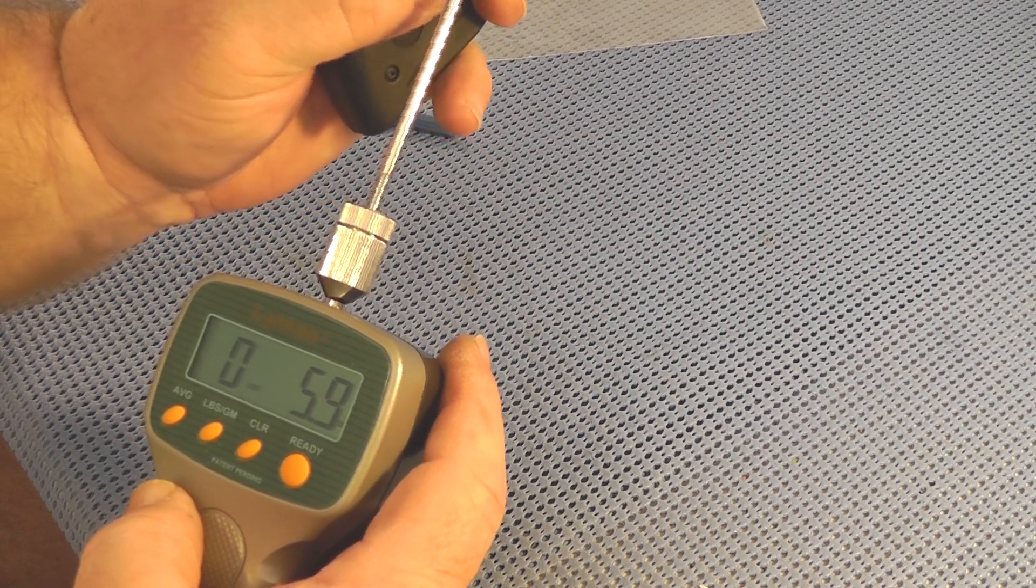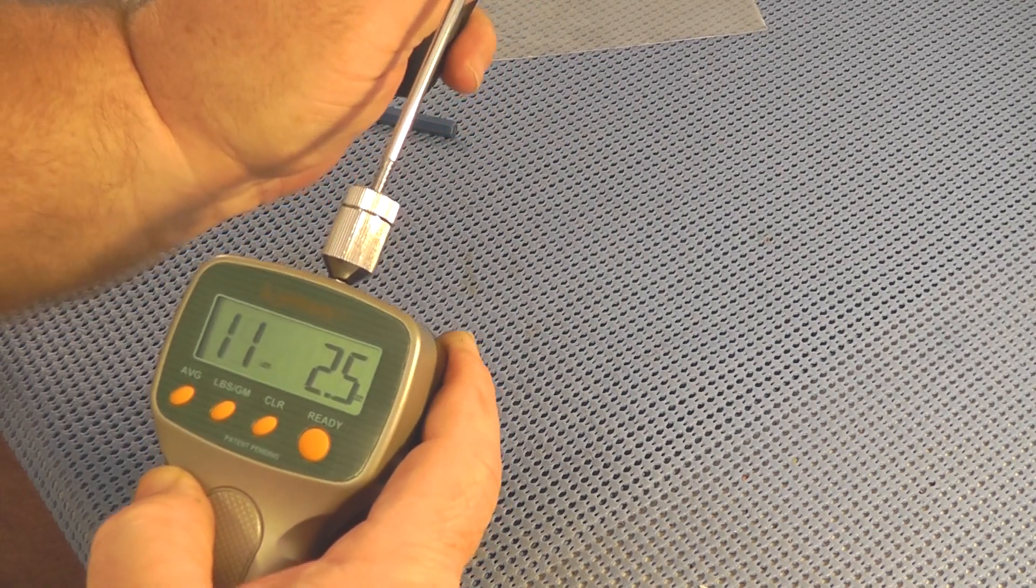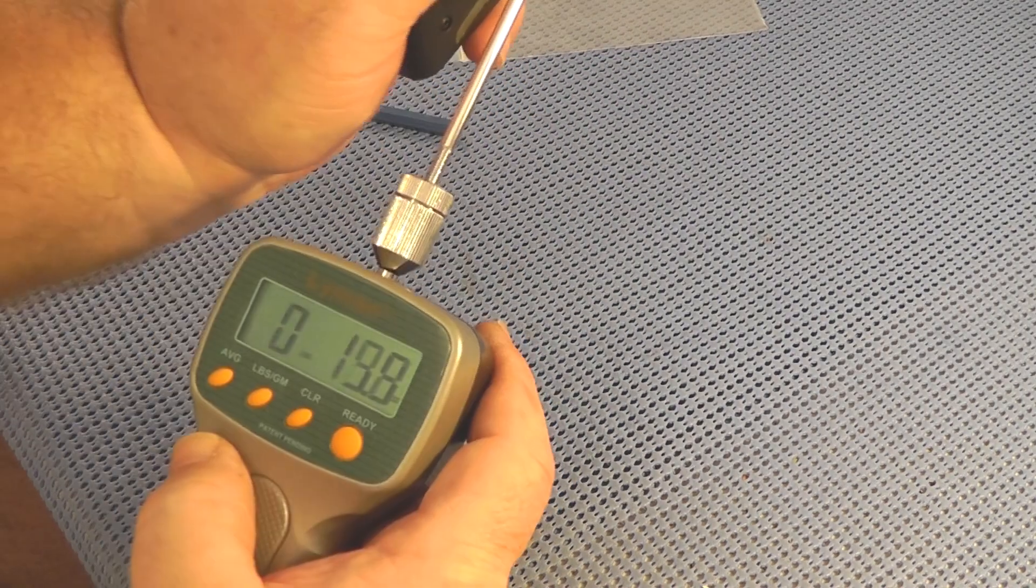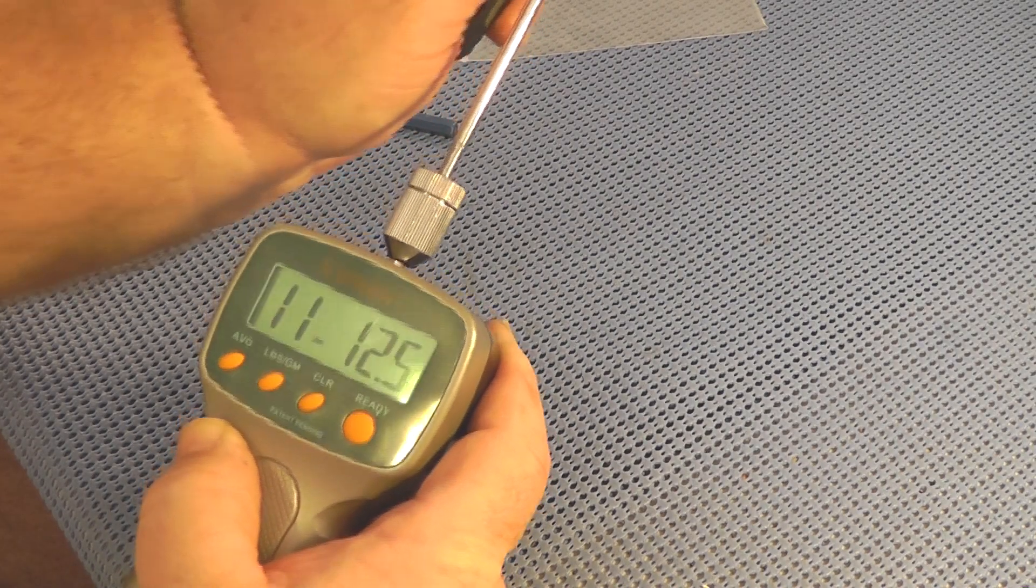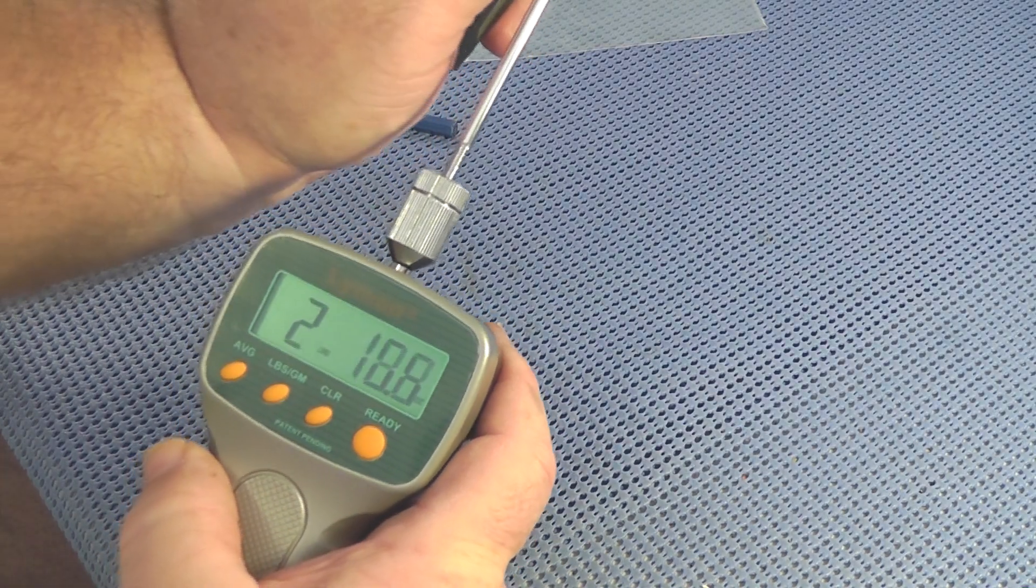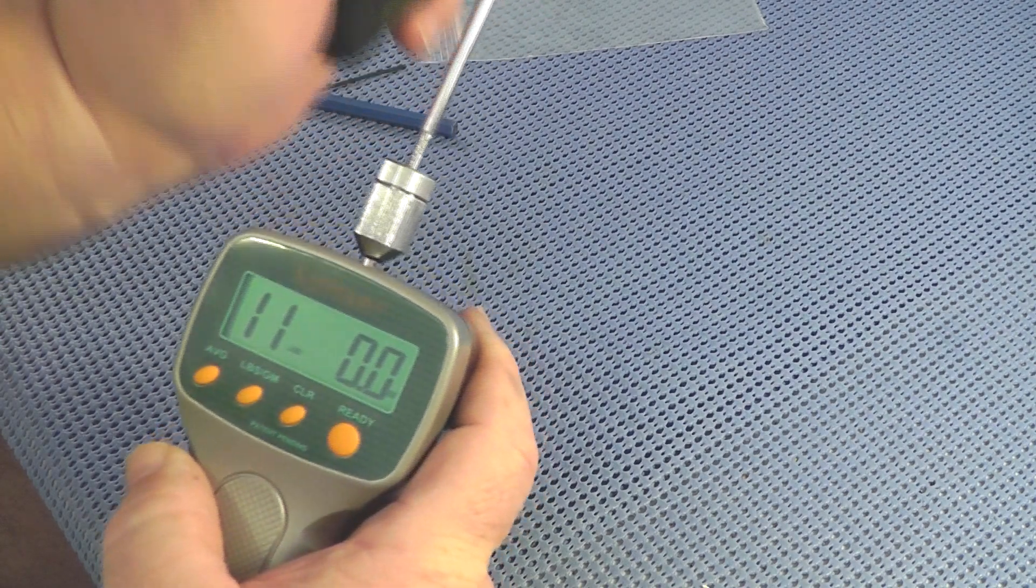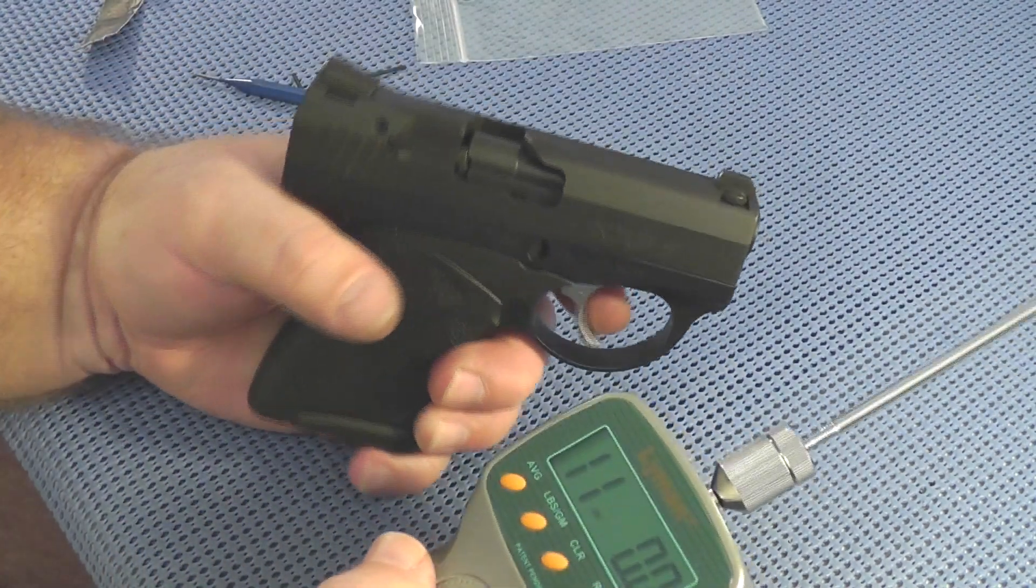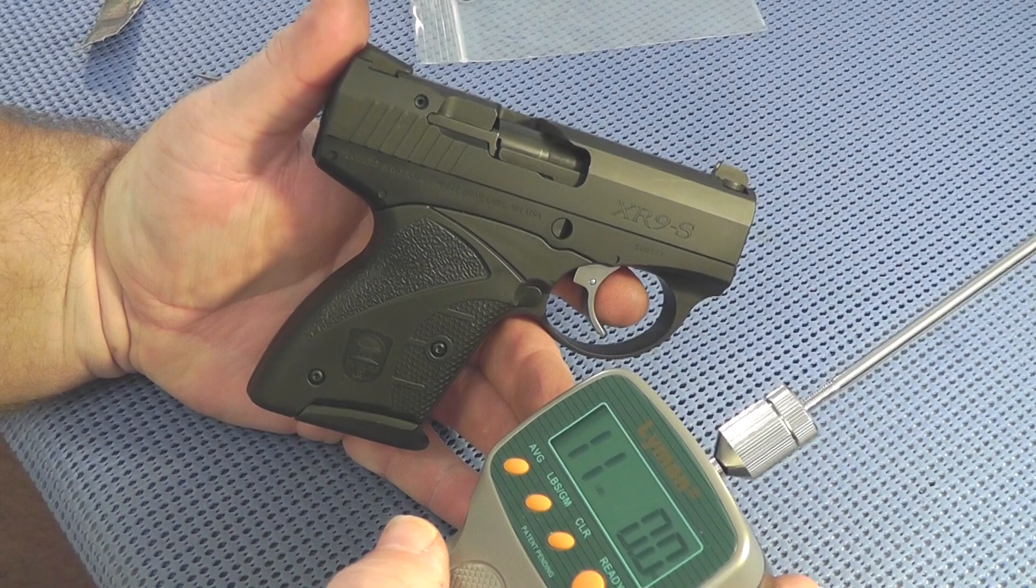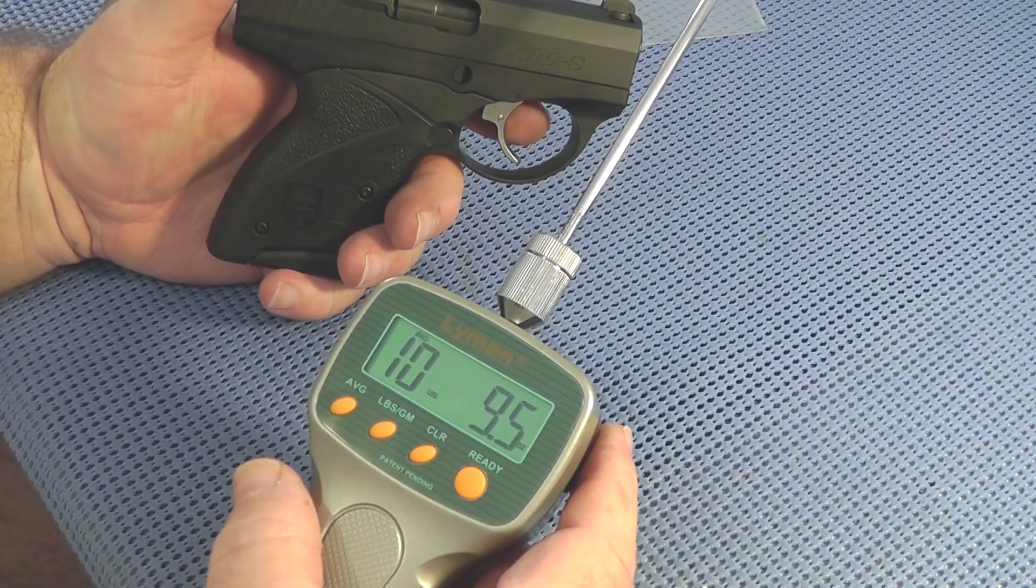One question I have for Arnie is I kept getting these eleven-pound readings on that trigger, and I had ordered a six-pound trigger spring. So I'm not sure if that's my gauge or what. I'll follow up with him on that.